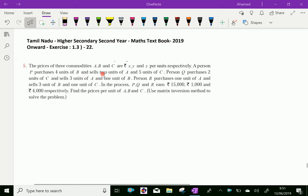The prices of three commodities A, B and C are rupees X, Y and Z per units respectively. A person P purchases four units of B and sells two units of A and five units of C. A person Q purchases two units of C and sells three units of A and one unit of B. A person R purchases one unit of A and sells three units of B and one unit of C. In the process,